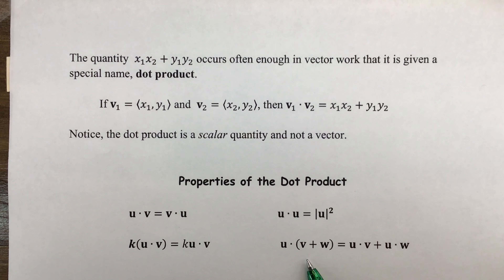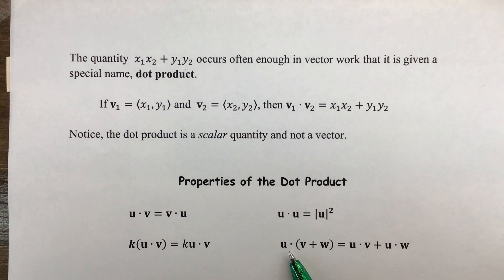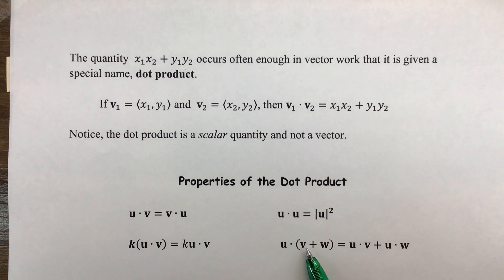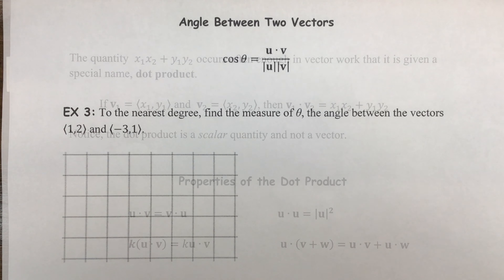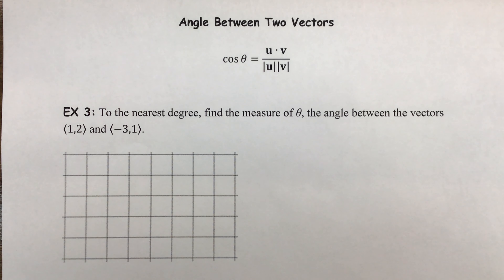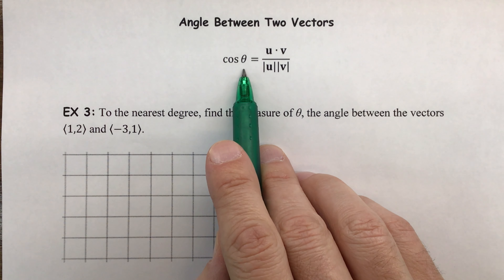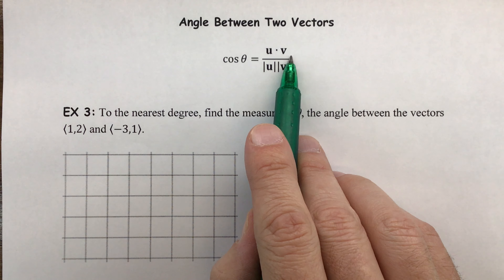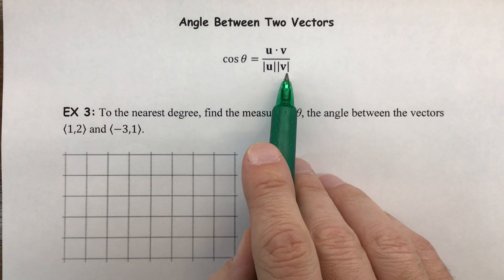Going back to the last property: you can distribute across addition. If you're taking a dot product between a vector and the sum of two other vectors, you can distribute that dot product to V and to W. Additionally, you can actually figure out the angle between two vectors — which we'll call theta — using a special equation. The cosine of the angle between the vectors is going to be equal to the dot product of the vectors divided by the product of the magnitudes.